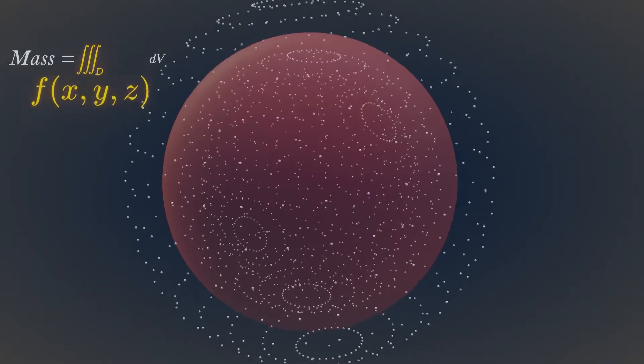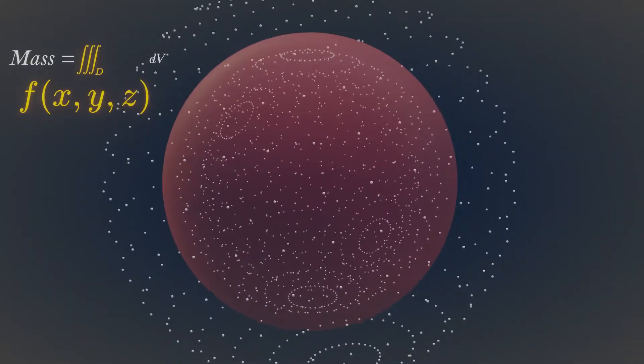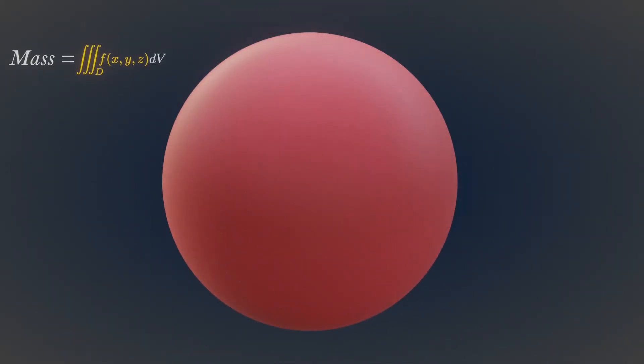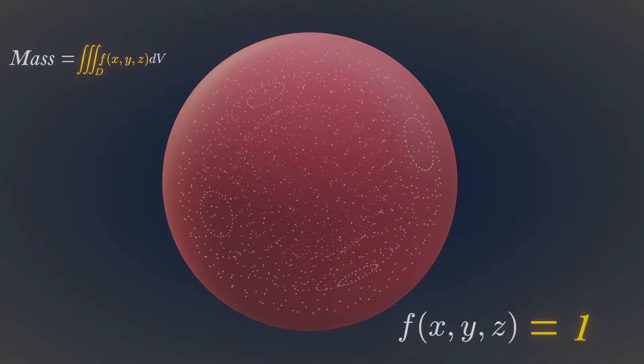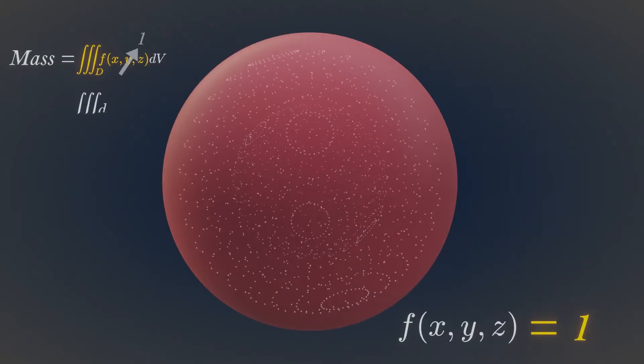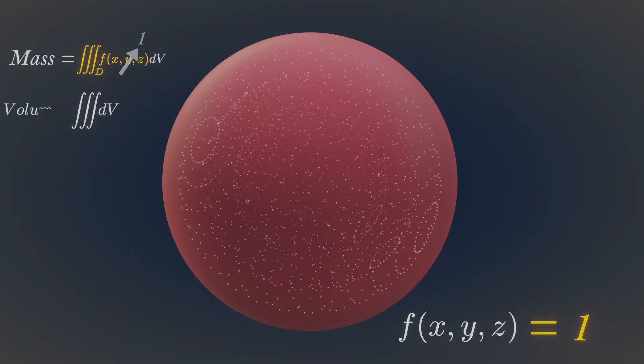Here, we are summing up all of the point densities inside the region of the object, and the sum of the densities gives the total mass. Now, if the density of this sphere has constant value of 1 throughout the volume, then calculating the triple integral gives us the volume of the object.